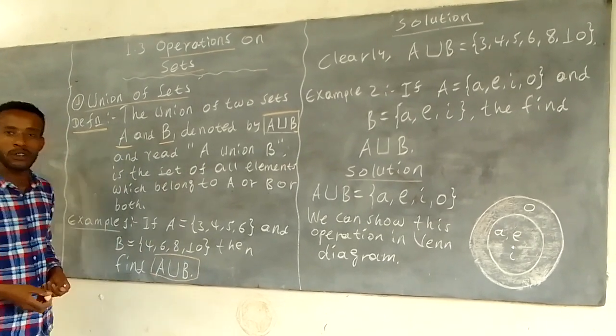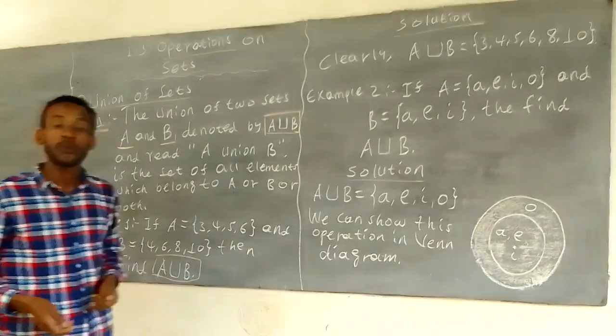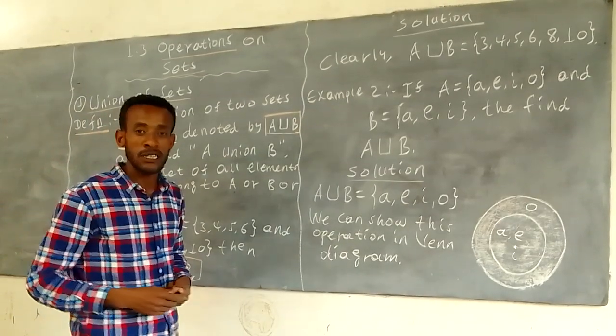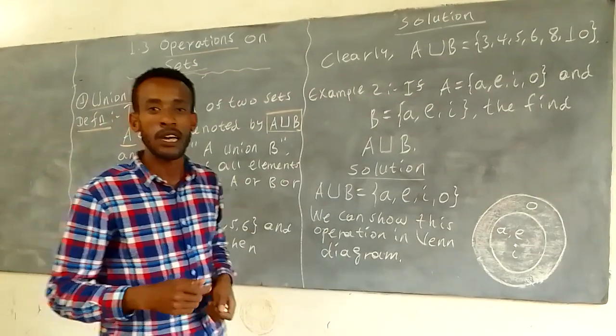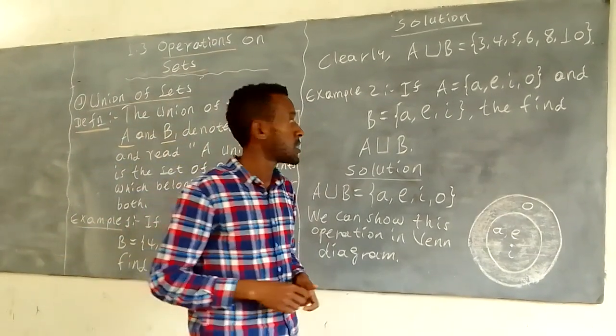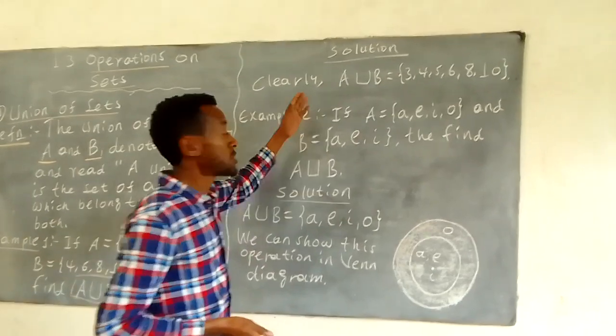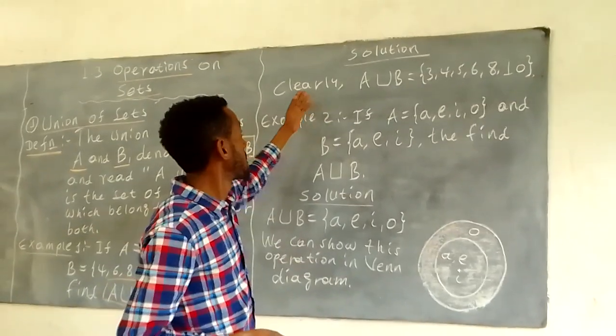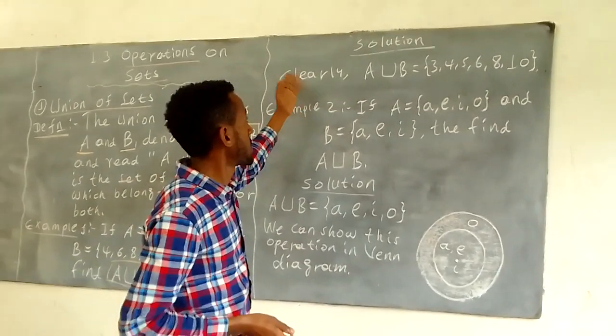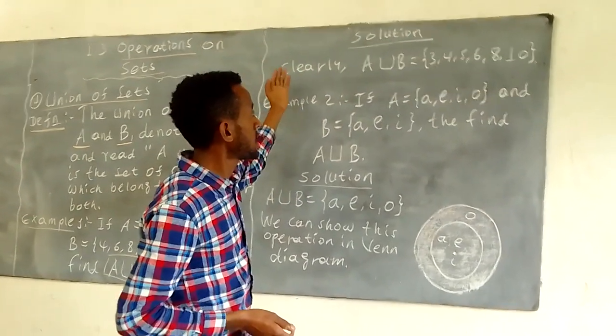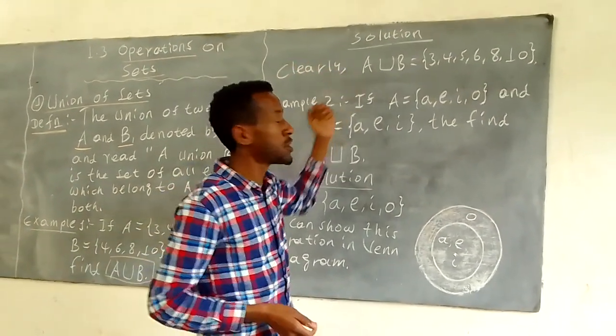Now, students, we are going to find the solution of A union B. The solution is A union B.